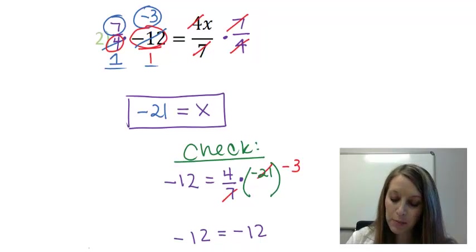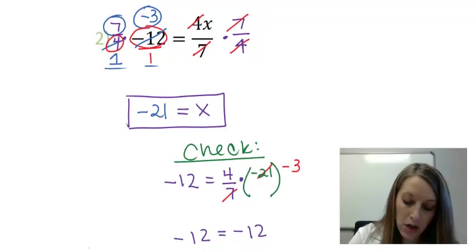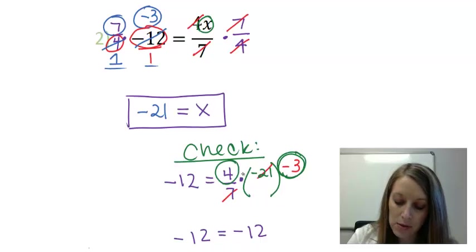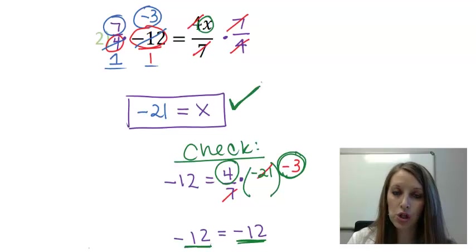This check was a very simple one. I substitute in my solution of negative 21 for my x variable here. When I did that, I reduced 21 over 7, leaving me with negative 3, and I multiply negative 3 times 4, giving me negative 12, which is what I'm looking for. So that means I do have my correct solution here.